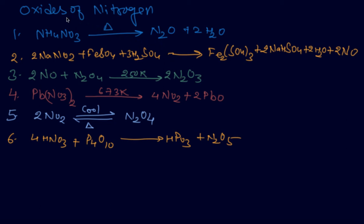Hello students. The next topic is oxides of nitrogen. There are five oxides present. Number one is nitrous oxide, which can be made by heating ammonium nitrate. It is also known as laughing gas. Its structure will be explained in this same class.